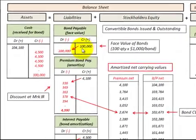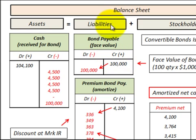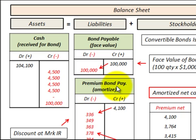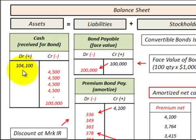Here is our example. We have $100,000 worth of bonds payable as a liability on the balance sheet, based on a par value of $1,000 per bond in a quantity of 100 bonds outstanding. When we originally issued these bonds we received $104,100 for them, so they were sold at a premium. We needed a balancing account between the cash of $104,100 and the bonds payable of $100,000, so we set up a valuation account — premium to bonds payable — recorded at $4,100.